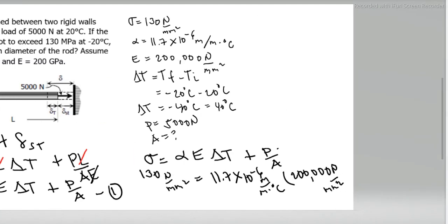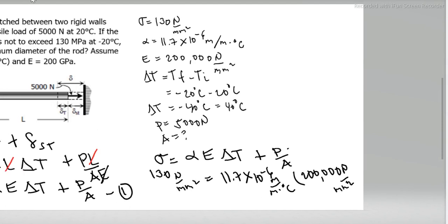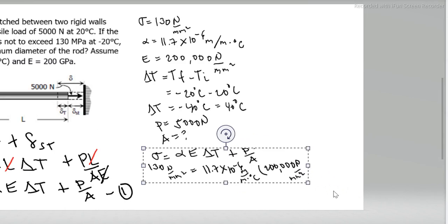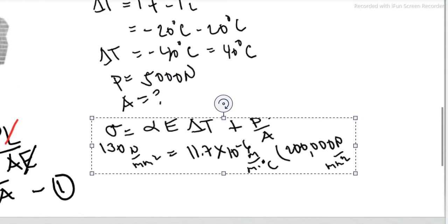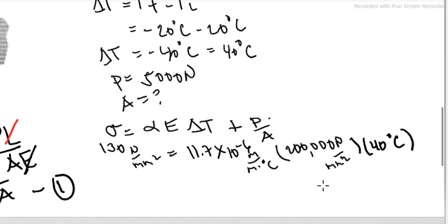Times change in temperature of 40 degrees Celsius, plus P of 5000 Newton all over area in mm squared. Because the units cancel out.